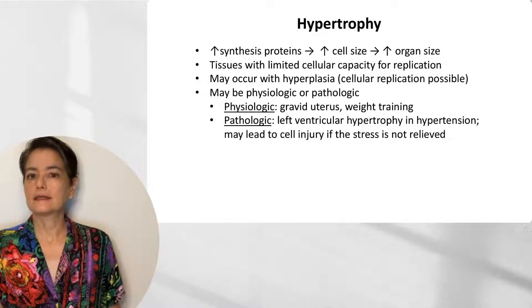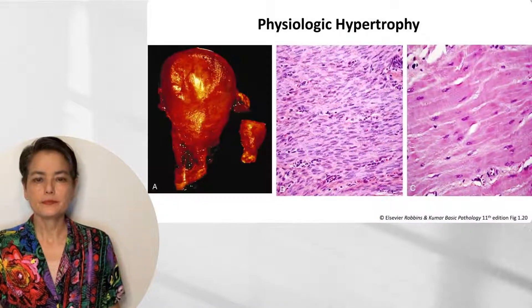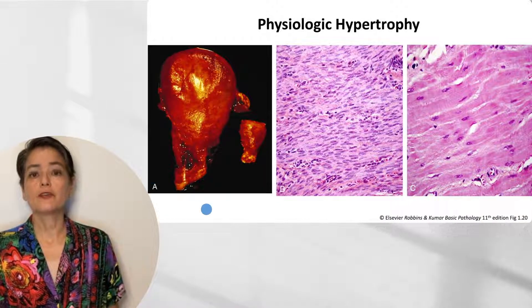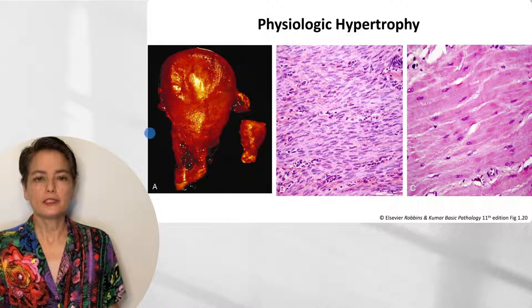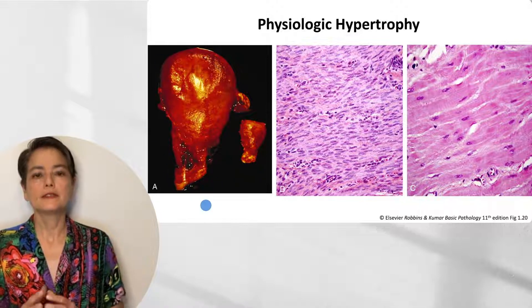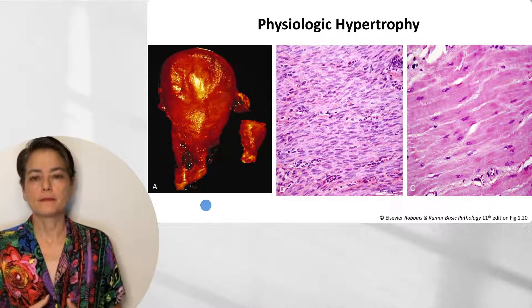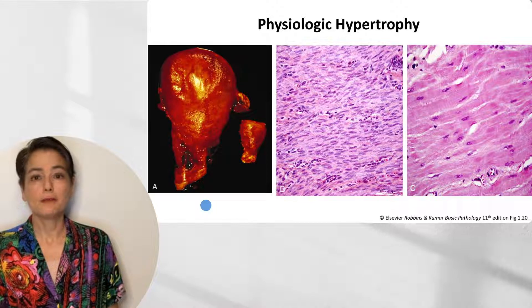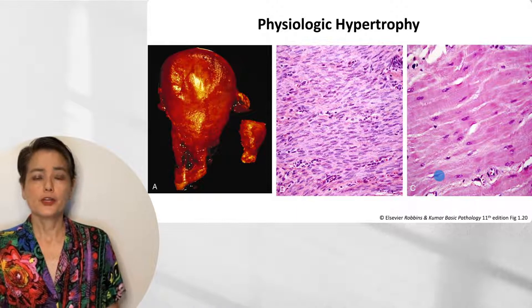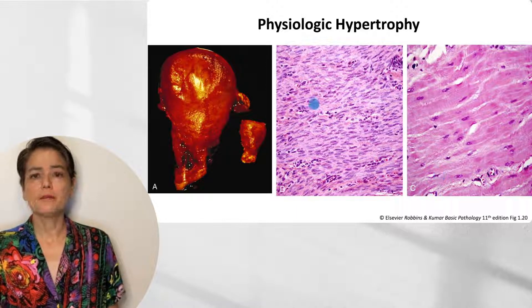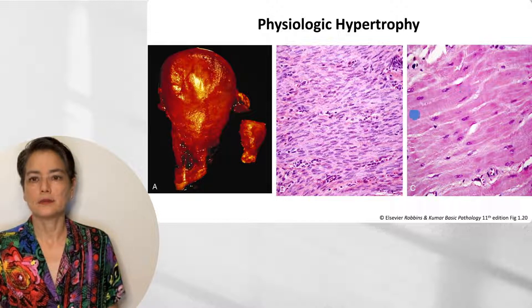Let's look at an example of physiologic hypertrophy. Here you can see two examples grossly of the uterus — the uterus from a reproductive age person showing the typical size, and by contrast, how much larger the gravid uterus is because it needs to accommodate the growing fetus. As a pathologist, I find the histology much more dramatic because these two images were taken at the exact same magnification, showing the smooth muscle cells of the myometrium. We can see how small these spindled cells are normally, but look how much larger they are in the gravid uterus — a great increase in cytoplasm and cell substance.